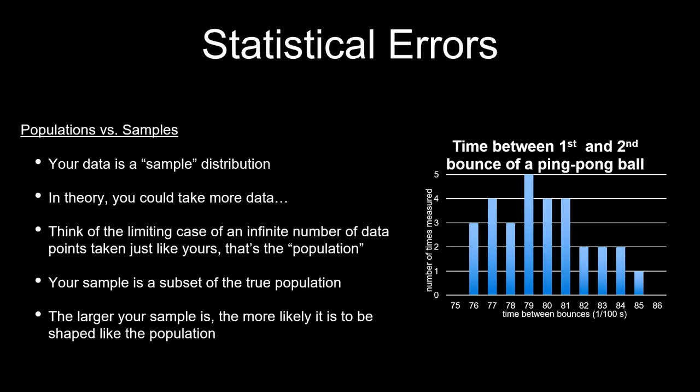In theory you could take more data, and if you think of the limiting case where you're taking an infinite number of data points, that's called the population. Instead of plotting the number of times something was measured, you could instead give the fraction of times you measured a particular value. So those are two key words: sample distribution is what you have taken, and population is this limiting case — a hypothetical thing where you think about having an infinite number of data points. You can think of your sample as being a subset of that population, and the larger your sample is, the more likely it is to be shaped like the population. We can estimate the properties of the population, and the mean of our sample is a good estimation of the population mean.